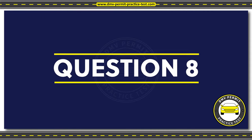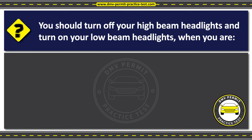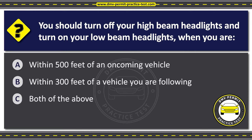Question 8. You should turn off your high beam headlights and turn on your low beam headlights when you are: Option A: Within 500 feet of an oncoming vehicle. Option B: Within 300 feet of a vehicle you are following. Option C: Both of the above. The correct answer is Option C: Both of the above. When driving in close proximity to other vehicles, high beam headlights can be blinding and cause a temporary loss of vision, hence you must dim your high beam headlights.